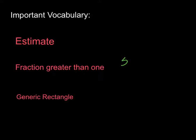For example, 5 thirds — if you simplify it, it's going to be greater than 1. Just remember that's the same thing as an improper fraction, which you may have heard before. Also remember a generic rectangle; we use that interchangeably with the area model.